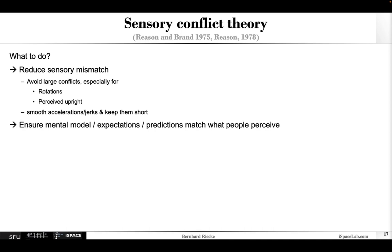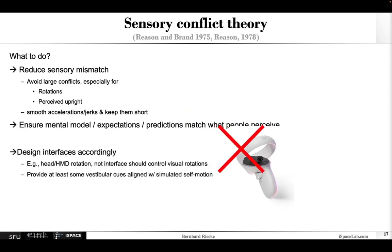Also ensuring that the expectations, the mental model, and the predictions actually match what people perceive. There are some implications for the kind of interfaces you use. Most prominently when you wear a head-mounted display, you should really move your head to change or rotate the viewpoint, not any kind of controller. Basically, don't ever use a controller to rotate the view in VR unless there's really no other way. Another thing that can help is providing at least some vestibular cues that align with the directional simulated self-motion.